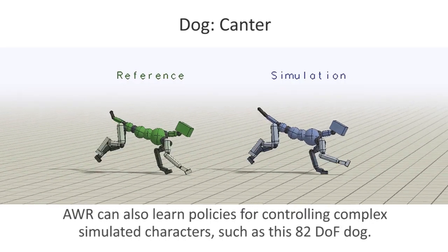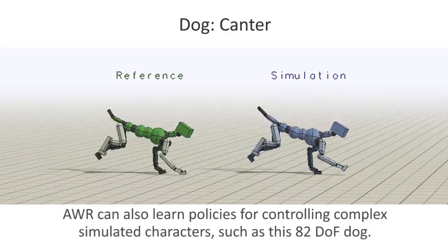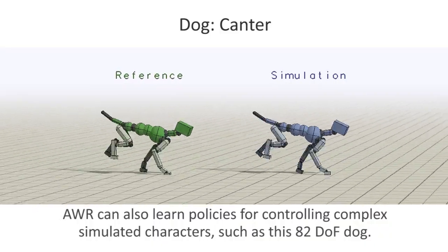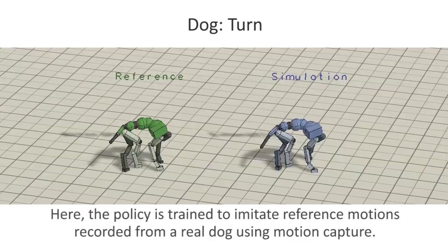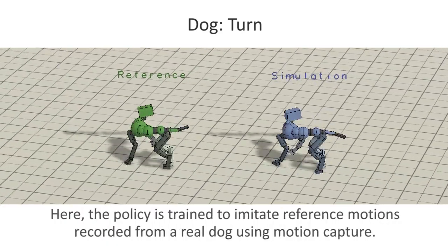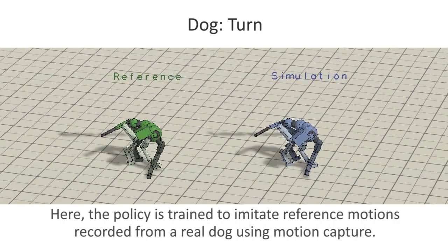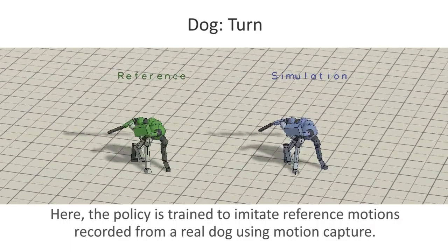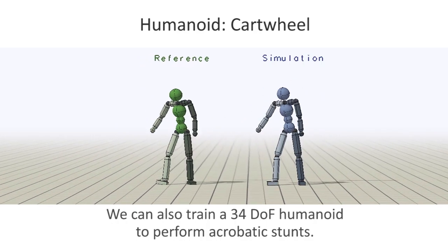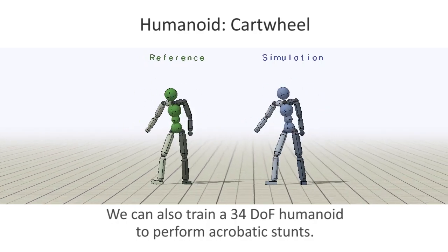We can also learn policies for controlling complex simulated characters, such as this 82 degrees of freedom dog. The policy is trained to imitate reference motions recorded from a real dog using motion capture. We can also train a 34 degrees of freedom humanoid to perform acrobatic stunts.